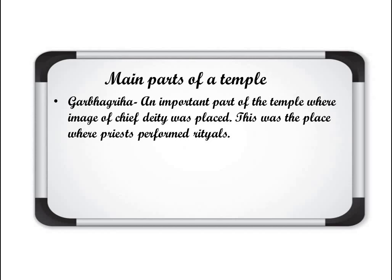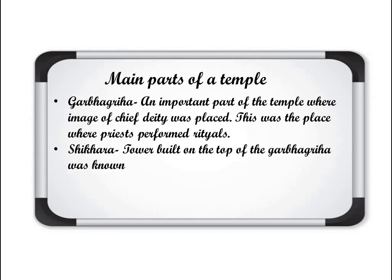Devotees also worshipped their deity in the Garbhagriha. The second main part is the Shikhara — a tower built on top of the Garbhagriha. You might have seen that all temples even now have a Shikhara or 'choti.' These Shikhara are a sign of a sacred place. As temples are sacred places for Hindus, the Shikhara is the symbol of that, and it is built on top of the Garbhagriha where the chief deity's image is kept.